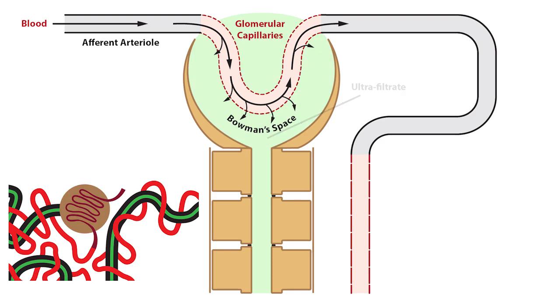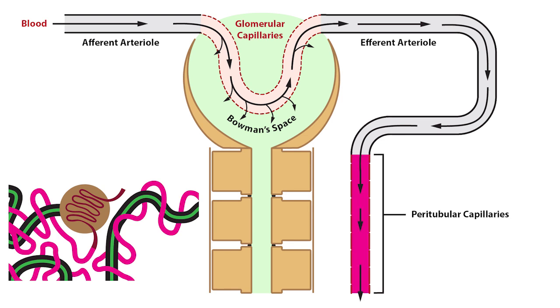The plasma that is not filtered exits the glomerular capillaries via the efferent arterioles and enters the peritubular capillaries or the vasa recta. Now the ultrafiltrate formed within the Bowman space passes unobstructed into the lumen of the nephron, where most of the water, electrolytes, and solutes are reabsorbed.